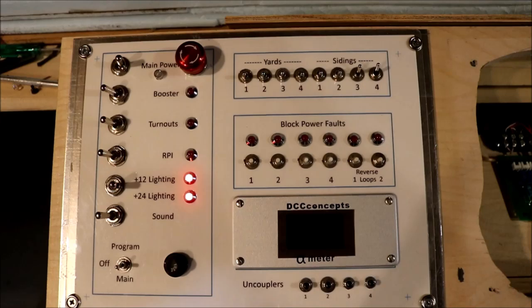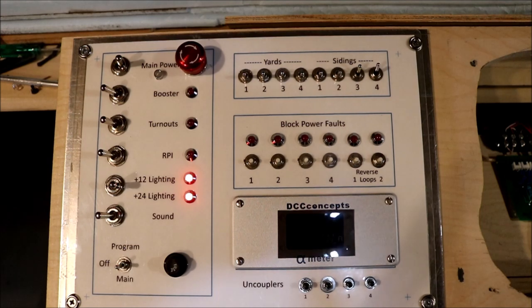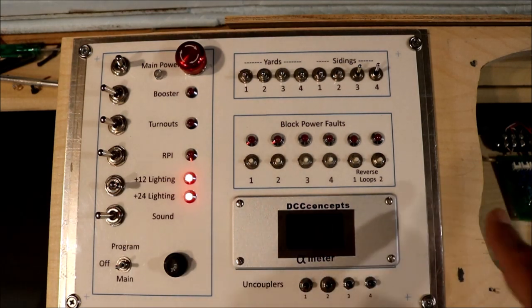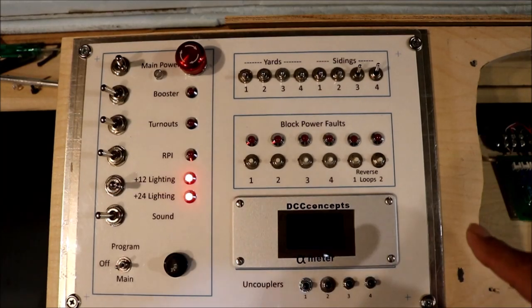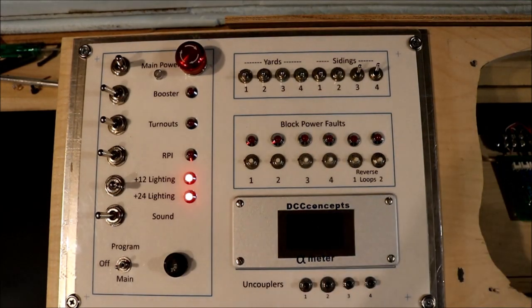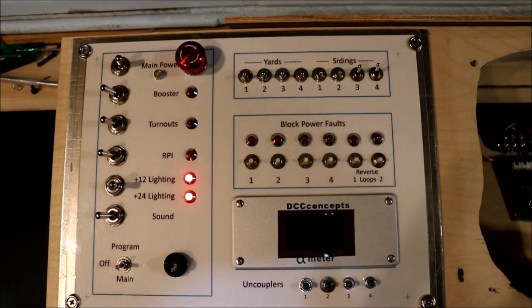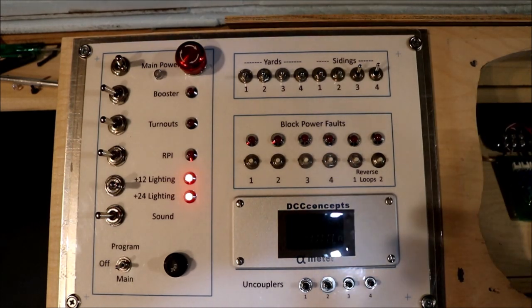The problem with that is the train or the loco will coast a certain distance before the track voltage reduces enough to completely stop it. And I thought that was a problem. The second way to stop the train right away is to hit the on-off button on the Digitracks, which is about 18 inches to the right of this control panel. So you have to find the little switch out of 16, the little push button, and push the button, and that'll stop it. So I wasn't totally comfortable with that.